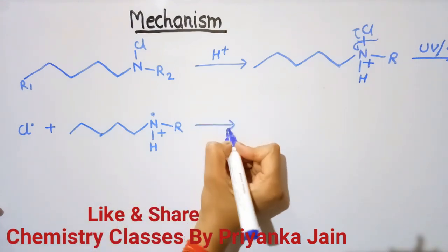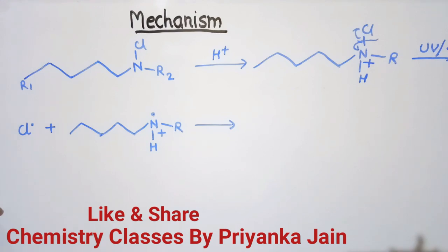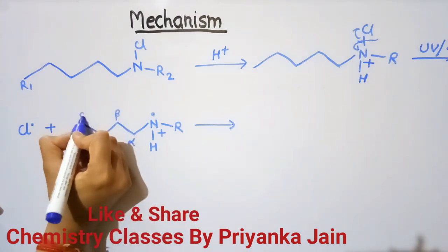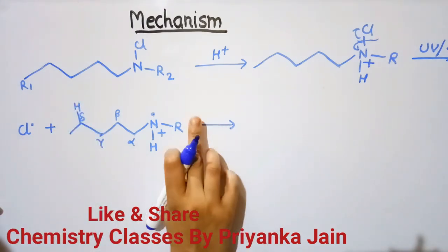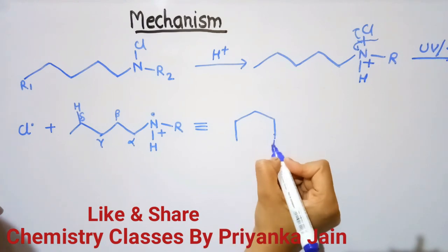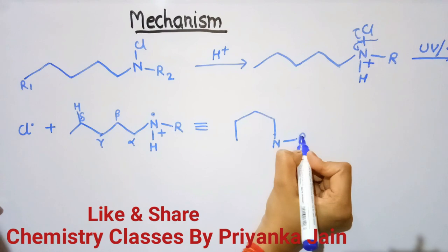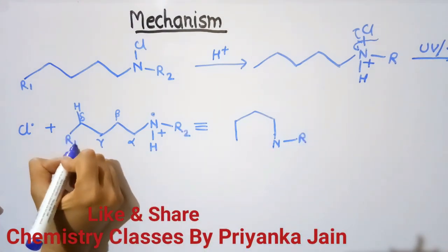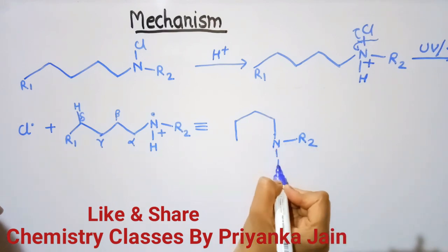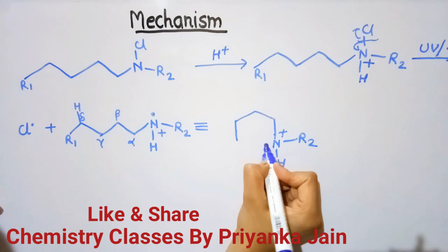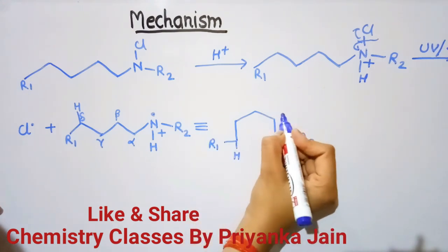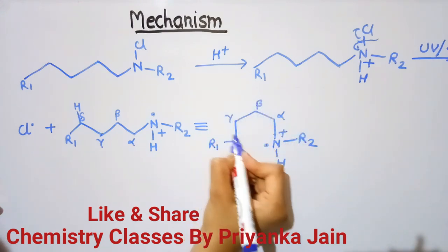In the next step, this nitrogen radical undergoes a 1,5-hydrogen transfer. The alpha, beta, gamma, and delta positions are identified along the chain, with a hydrogen atom present at the delta position. We can write this compound showing the nitrogen, R group, R1, and R2, with alpha, beta, gamma, and delta positions labeled.